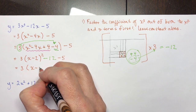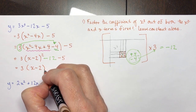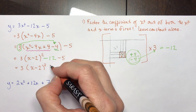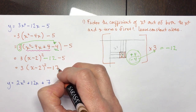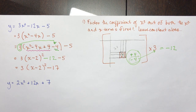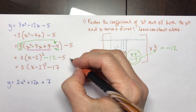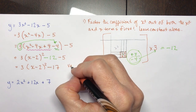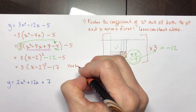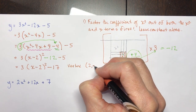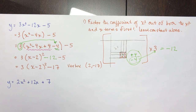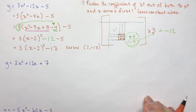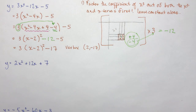So I have 3(x minus 2) squared, then minus 12 minus 5 gives minus 17. The vertex is 2 and minus 17. Always state the vertex afterwards — it gives you good practice.